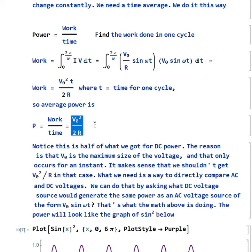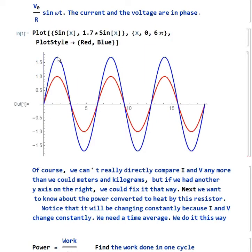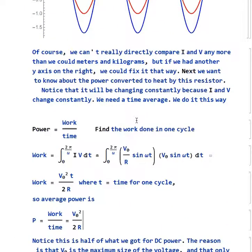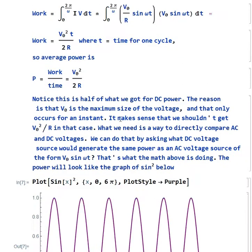Now, the thing that's a little bit annoying here, this is half of the formula that we got for DC power. There we just said it was V²/R. The problem is V₀ is this maximum size of the voltage, and the voltage only has that value for an instant. So we don't really expect it to be the same power delivery as a battery that had that same voltage at all times. So it makes sense that we don't get V₀²/R, but we really kind of want to keep the old formula if possible.